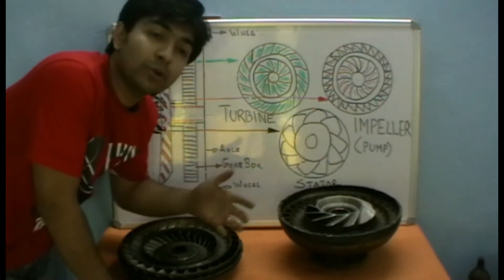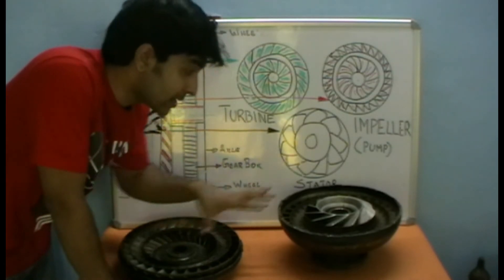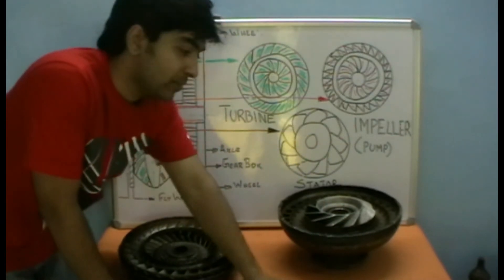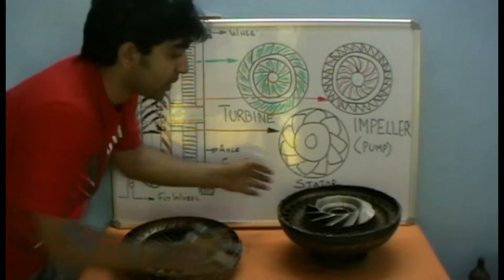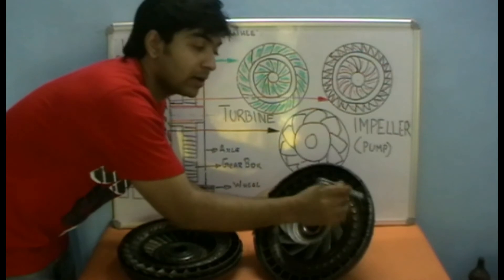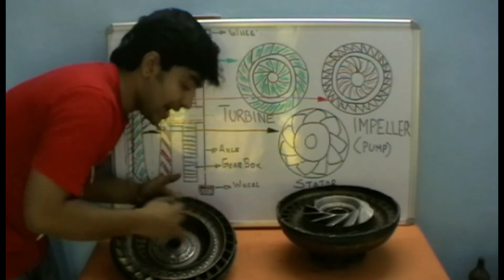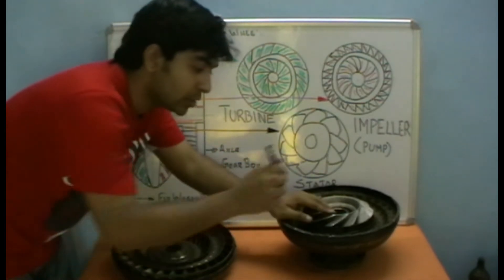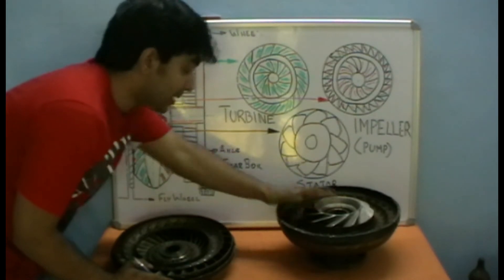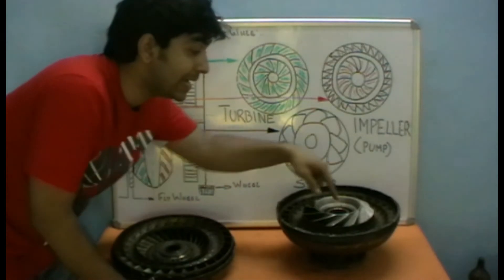So whenever the turbine speed is lesser than the impeller speed, torque multiplication is happening. When the impeller is rotating, oil flings from the casing portion, comes and hits the turbine, rotates it, and is then redirected through the stator back to the impeller. When the turbine RPM is less, the velocity of the oil being redirected back gets added up to the impeller.